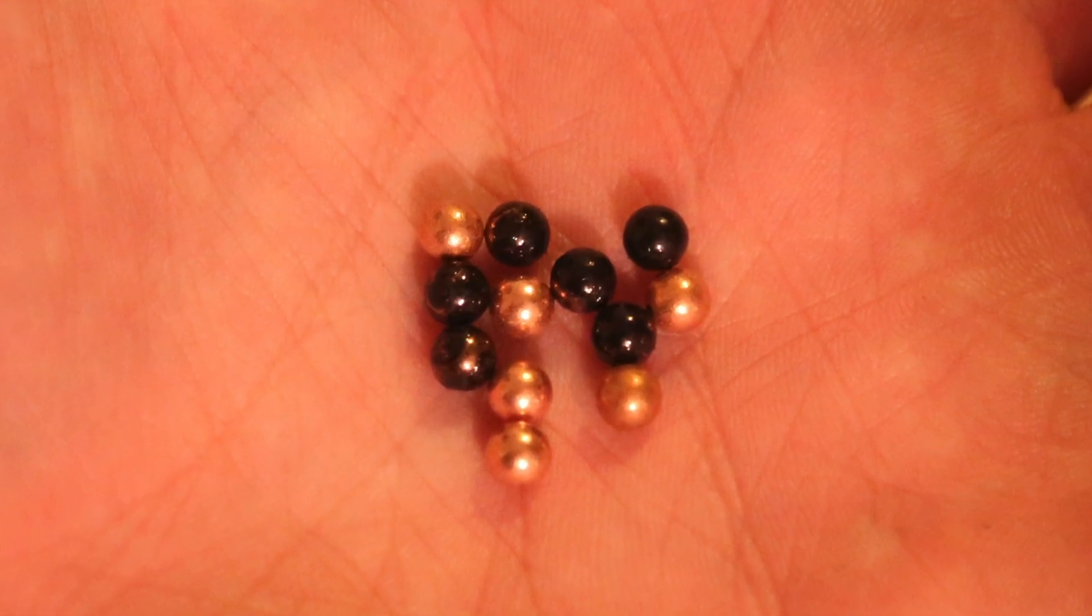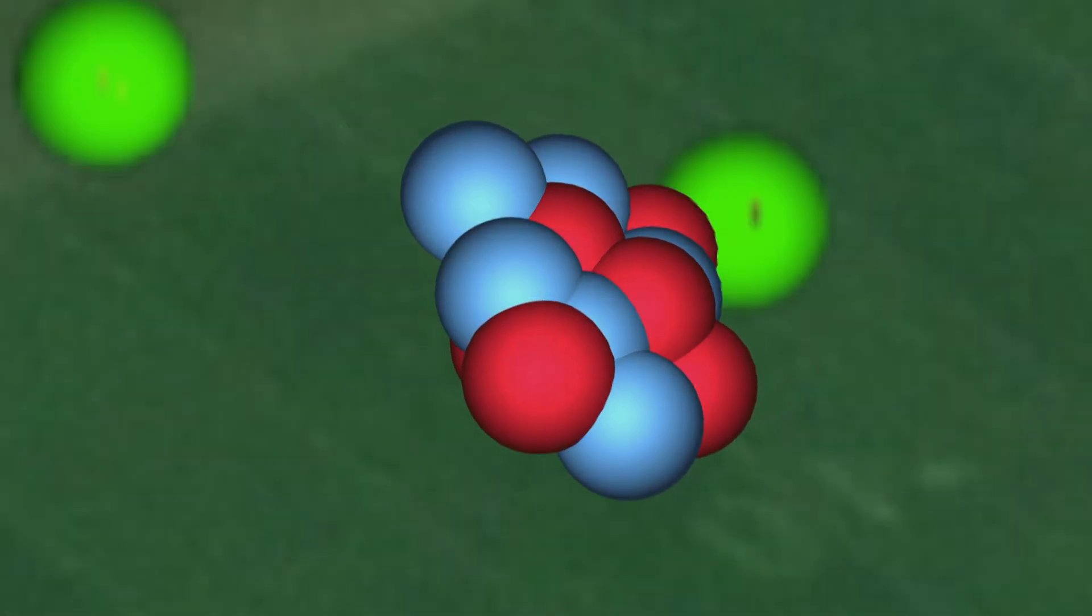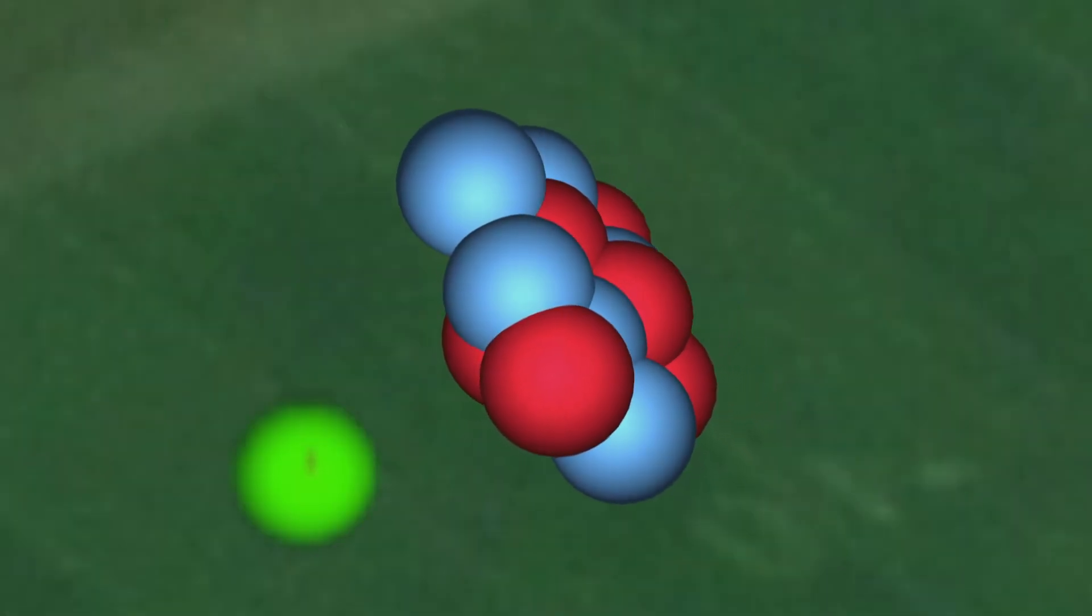Six protons and six neutrons form the nucleus of a carbon atom. Given that the carbon has six protons, it must also have six electrons. So if the protons are the size of BBs, how big is the atom?